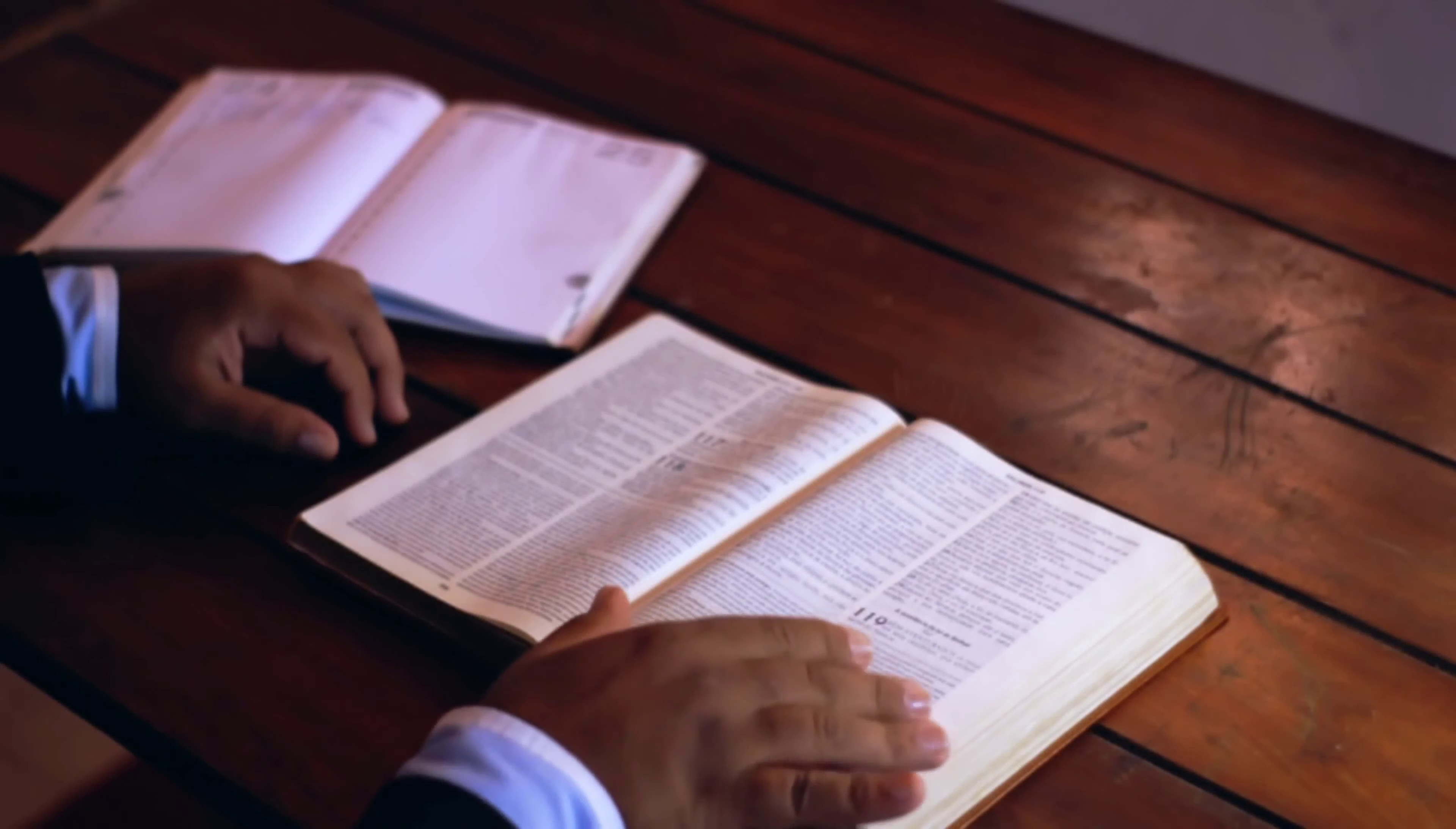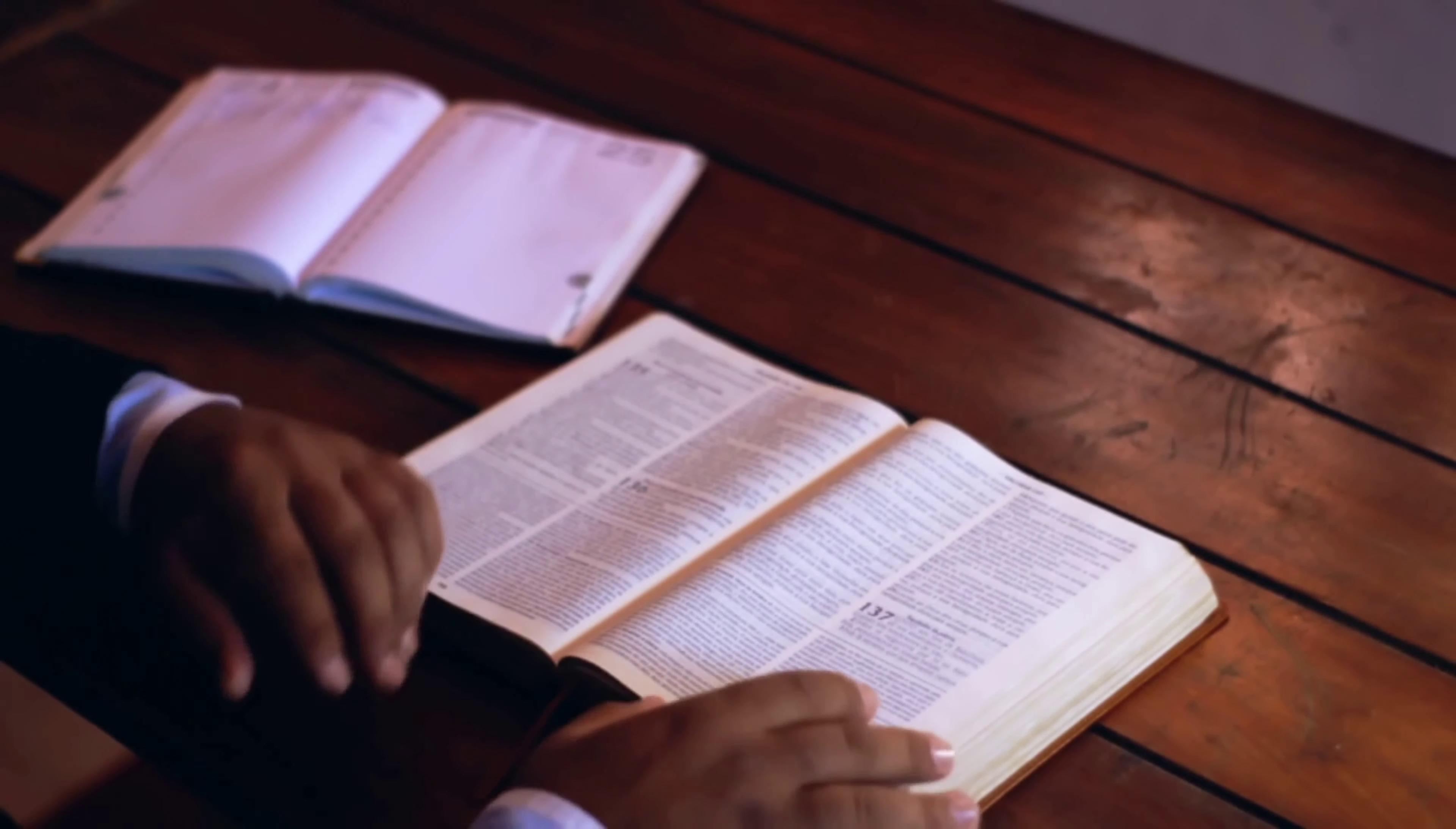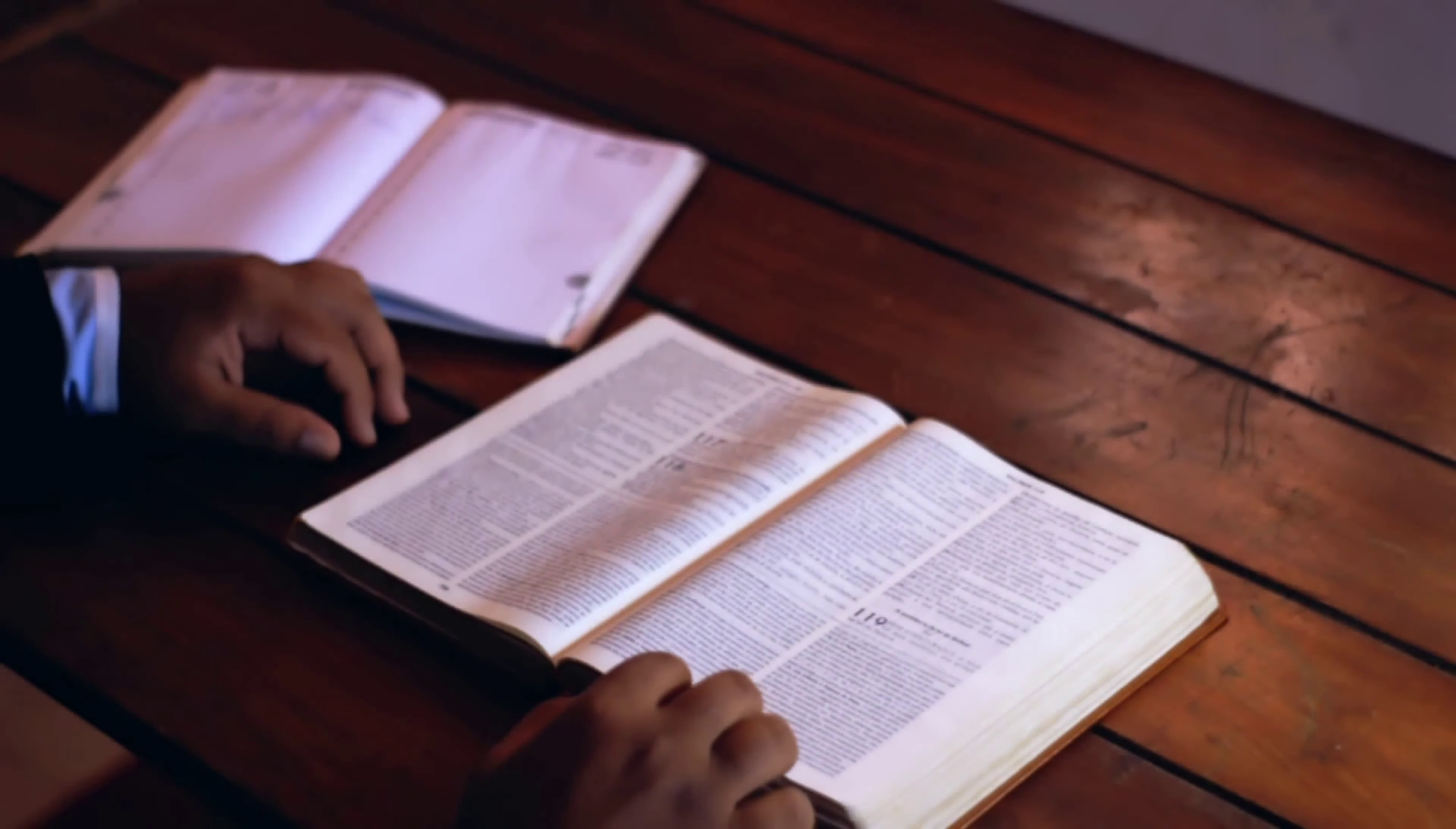The discretion of a man makes him slow to anger, and his glory is to overlook a transgression. The king's wrath is like the roaring of a lion, but his favor is like the dew on the grass.